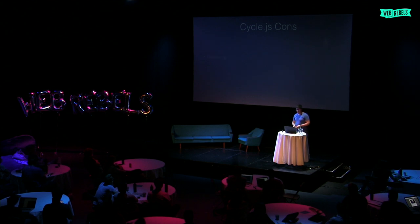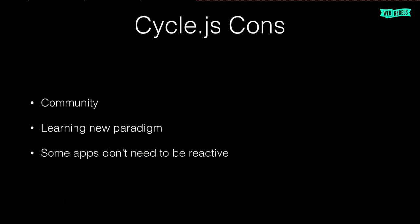What are the CycleJS cons? There are always some cons — this is not an ideal framework. First, the community: it's not a new framework, it's been around for a couple of years, but the community is still small compared to Angular or React, and there are not so many modules supporting it. But it's easy to create a module and give back to the community. Next, learning a new paradigm — reactive programming is hard to start with, and without that knowledge you cannot work with CycleJS. And of course, some apps don't need to be reactive: if you're building a simple website or blog with not much user activity and probably just one API endpoint, that's where you don't need CycleJS — it's made for more side effects and more interactivity.